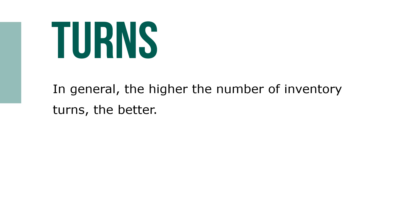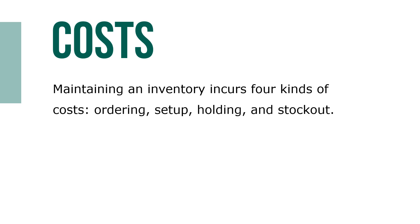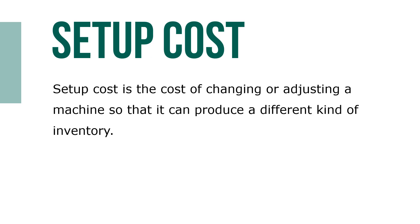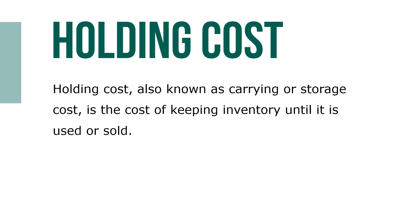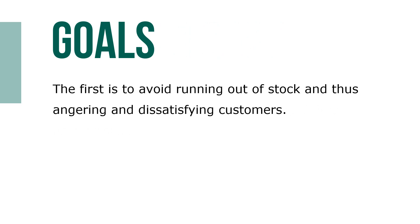Maintaining an inventory incurs four kinds of costs: ordering, setup, holding, and stockout. Setup cost is the cost of changing or adjusting machines so that they can produce a different kind of inventory. Holding cost, also known as carrying or storage cost, is the cost of keeping inventory until it's used or sold.